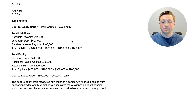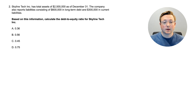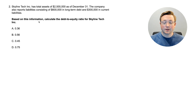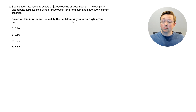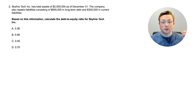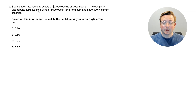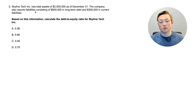Here we are at question two. We should read the last part of the question first: based on this information, calculate the debt-to-equity ratio for Skyline Tech Inc. Skyline Tech Inc. has total assets of $2.5 million as of December 31st. The company also reports liabilities consisting of $600,000 in long-term debt and $300,000 in current liabilities. With this information, we have to figure out the debt-to-equity ratio.